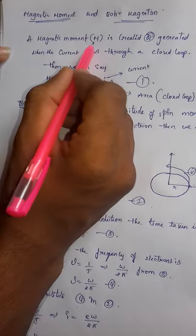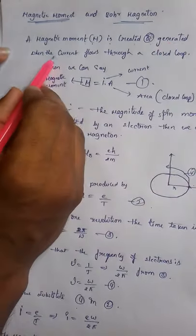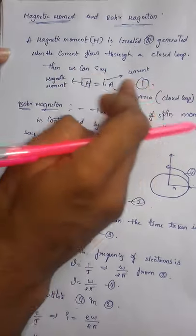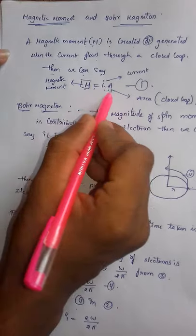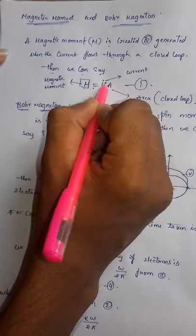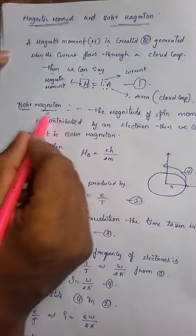A magnetic moment M is created or generated when current flows through a closed loop. Then we can say M equals to I A, where A is the area, I is the current, and M is the magnetic moment.